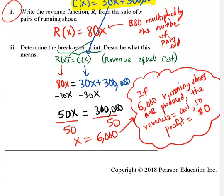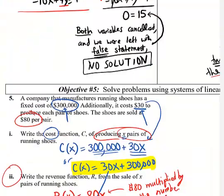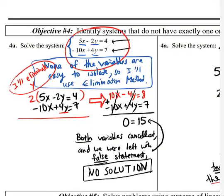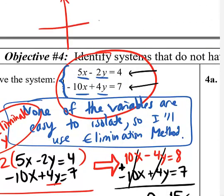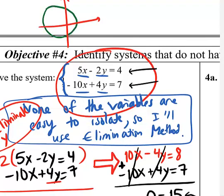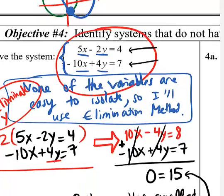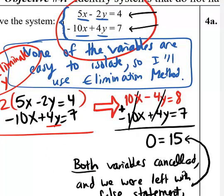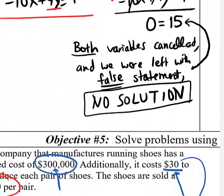In the next section we'll do similar things using the substitution and elimination methods, but we'll be solving nonlinear systems of equations — where one of the equations represents a circle, parabola, or another curve rather than just a line. For example, you might have a parabola and a circle and want to know where they intersect — there could be two intersection points. It sounds complicated, but since we already know the substitution and elimination methods, it should be manageable.